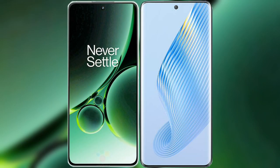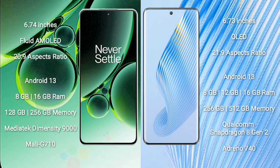I will compare the new OnePlus Nord 3 with Honor Magic 5. OnePlus Nord 3 comes with a 6.74-inch flat AMOLED display and aspect ratio 20:9. Honor Magic 5 comes with a 6.73-inch OLED display and aspect ratio 21:9.